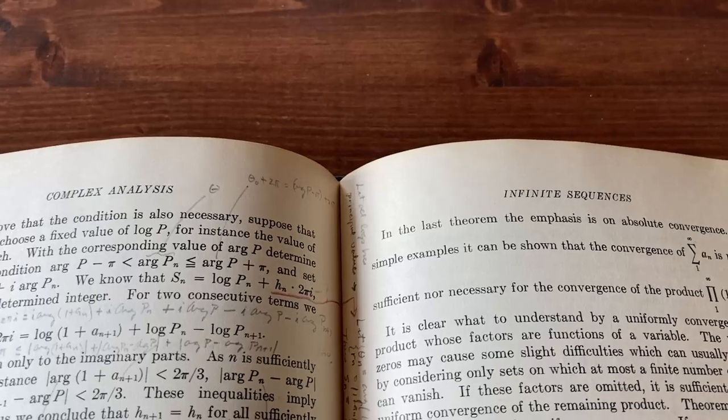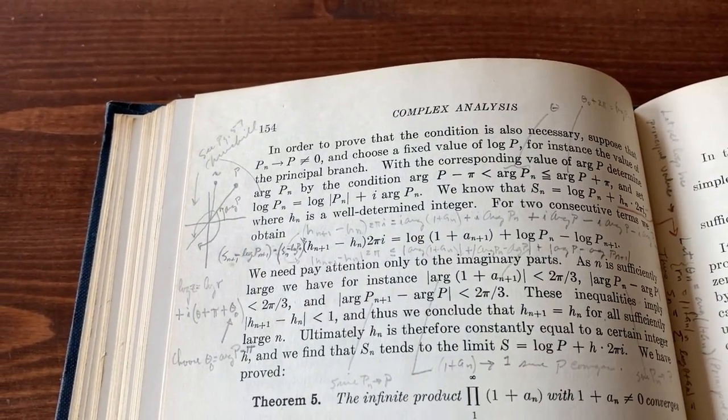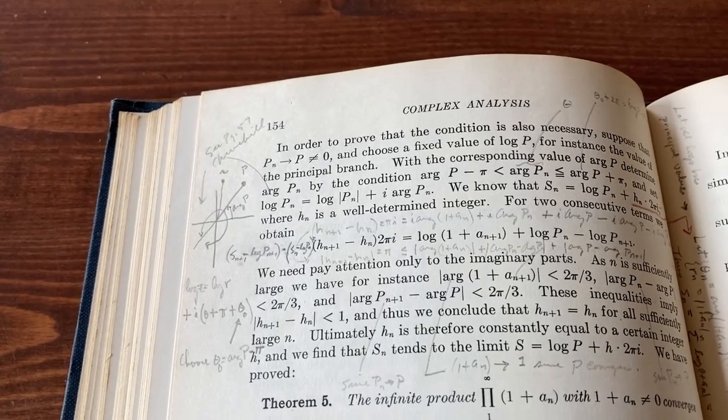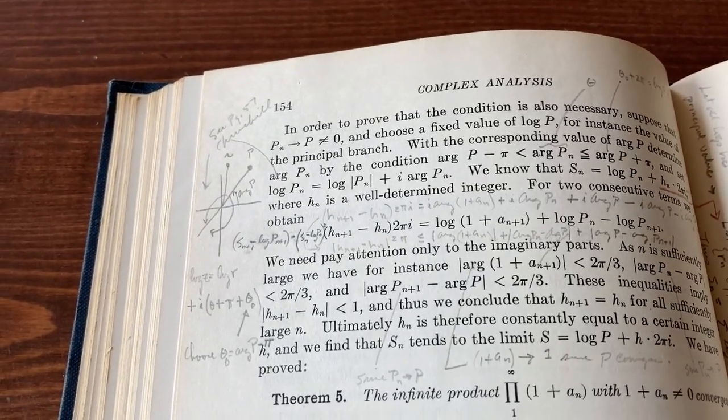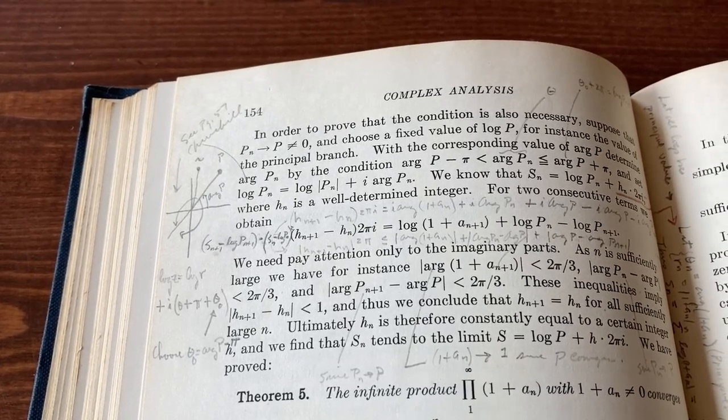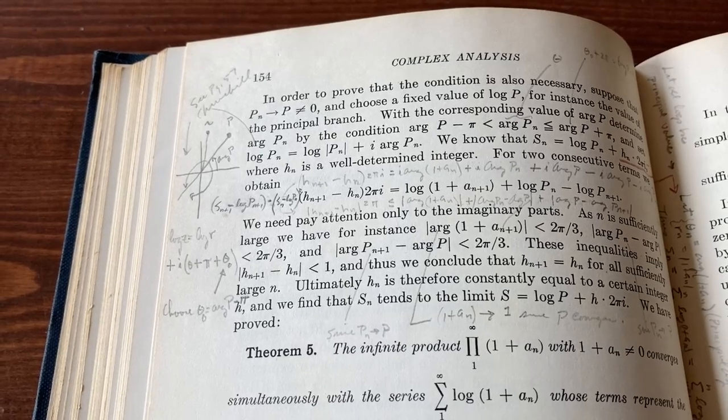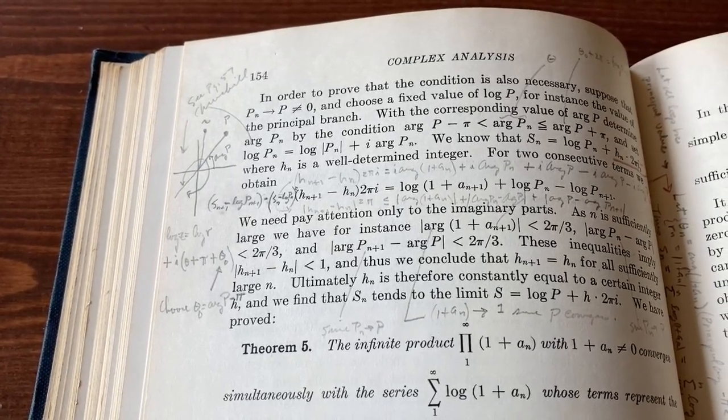This, I believe, is from the chapter on infinite sequences. Yes. And you see all this writing in the book. This was not me. This was someone a long time ago, perhaps in the 50s, right? Trying to understand what was going on in the book. Trying to really understand this and really learn the mathematics. That's kind of what you have to do a lot of times to understand books like this.